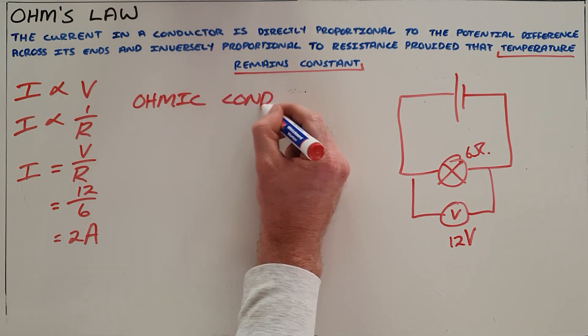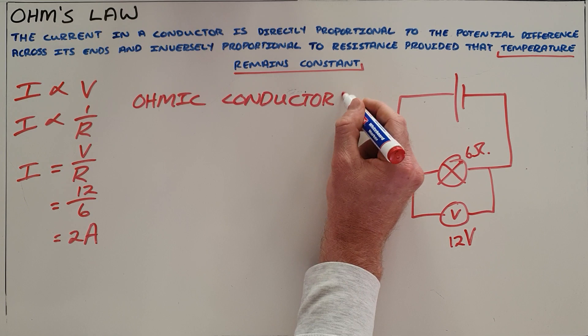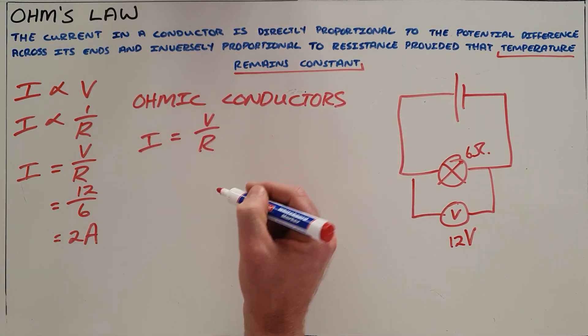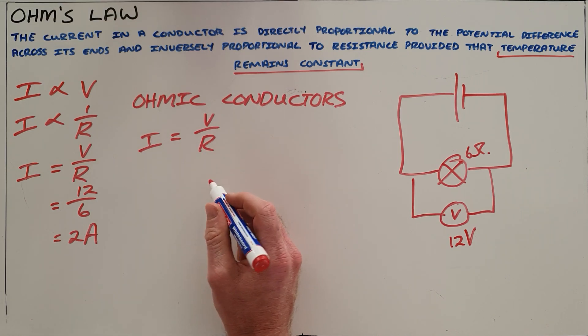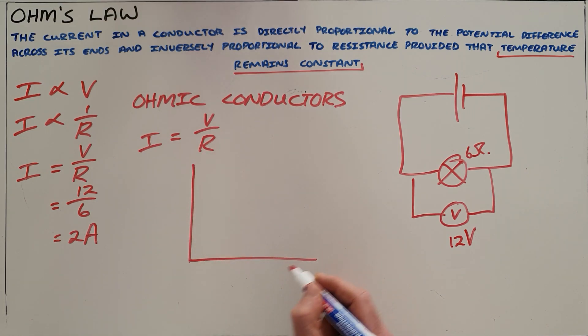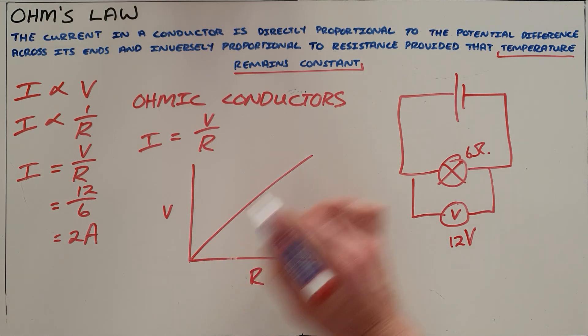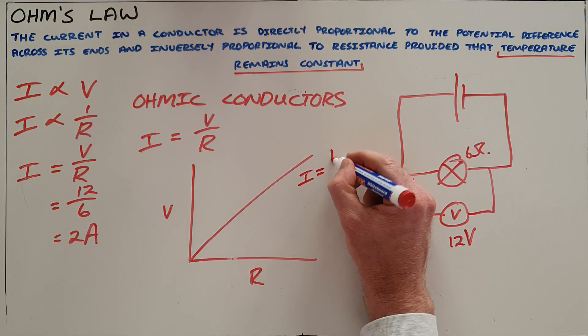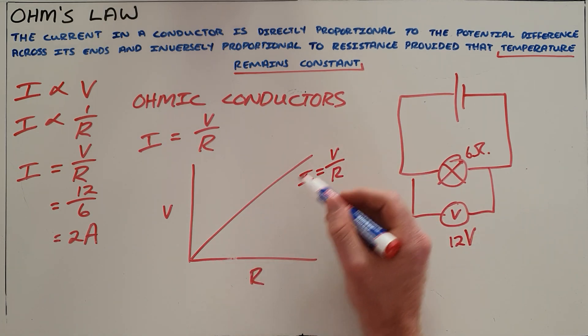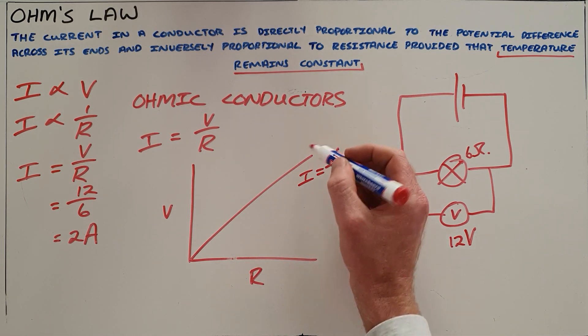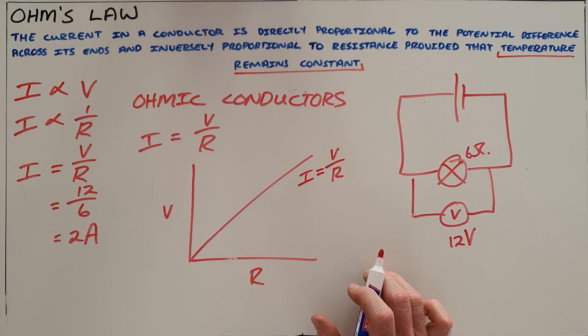And we know that ohmic conductors are ones for which this formula I equals V over R is always true, basically saying that if we were to draw a graph of voltage versus resistance, our graph would always be a straight line. We know the gradient of that graph is voltage over the resistance, and that is then constant for an ohmic conductor. A non-ohmic conductor would mean as it heats up, the resistance also changes.